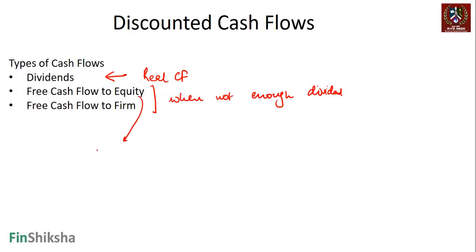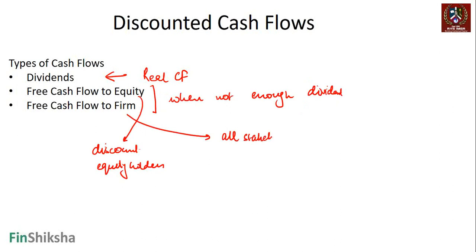In the case of free cash flow to equity, you discount the cash flow to equity holders only. In the case of DCF using free cash flow to firm (FCFF), you look at all stakeholders, including those who have provided the debt. In the case of equity, we're going to use a variant of net profit, which is the cash flow to the equity holder.